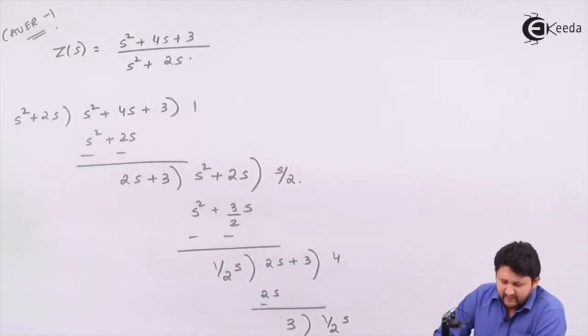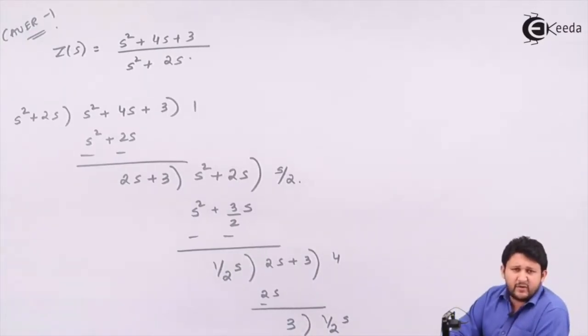Let's have a look at Cauer Form 1 for your RC circuit. When I say Cauer Form 1, the thing that should come to your mind is continuous division.